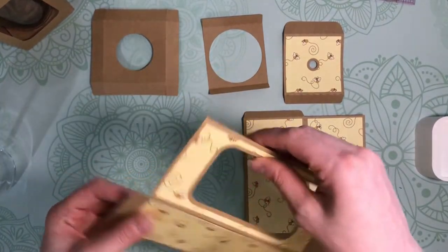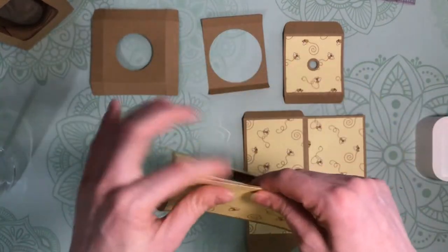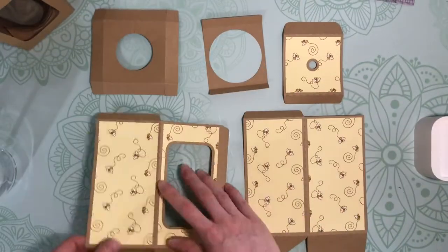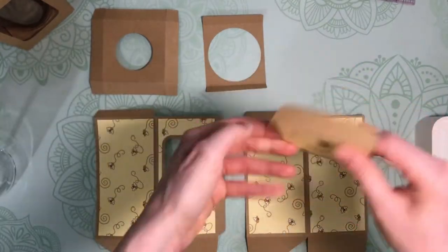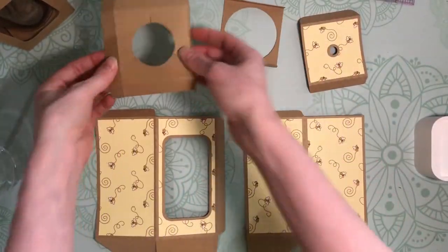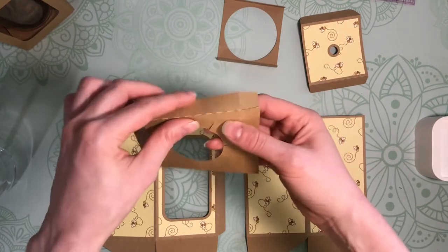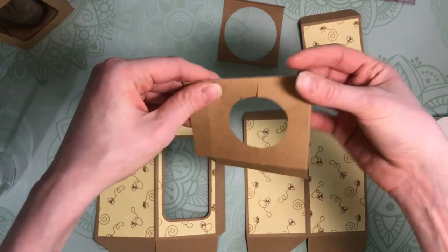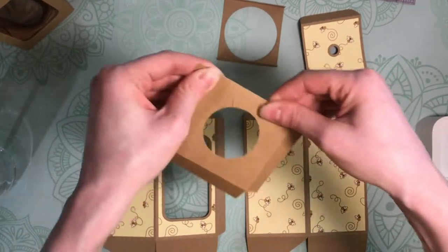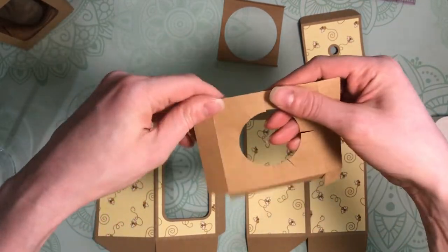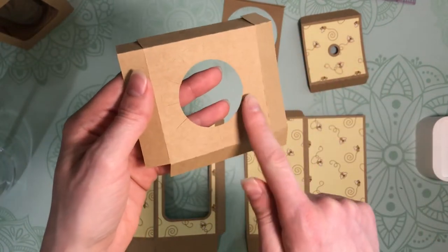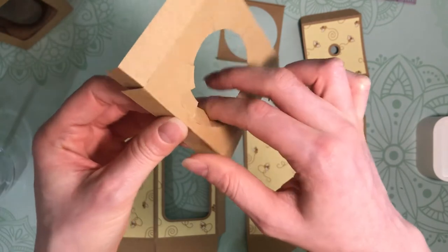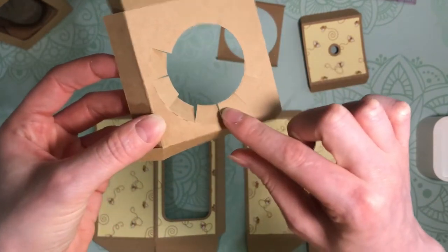So you're just going to go through and fold along all the score lines, and then for the bottom cushion you're going to fold all the way around. We have this ring on the inside, and what you're going to do is gently push down on these little flaps and leave that.